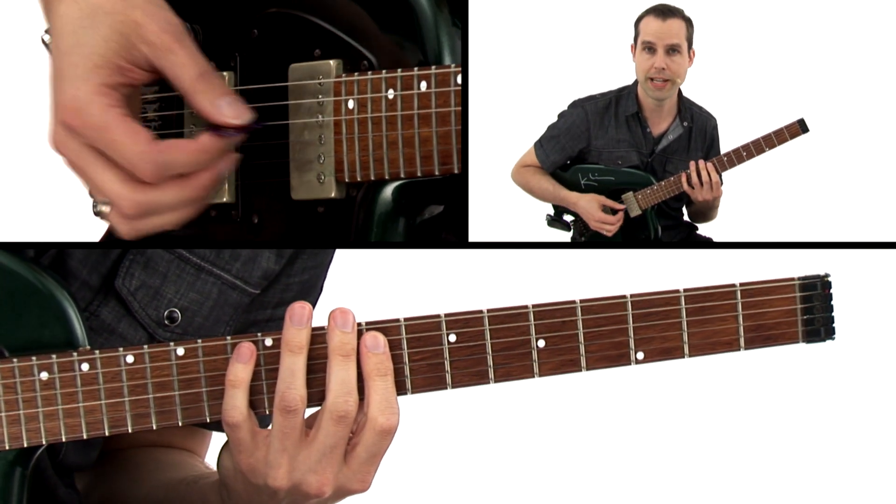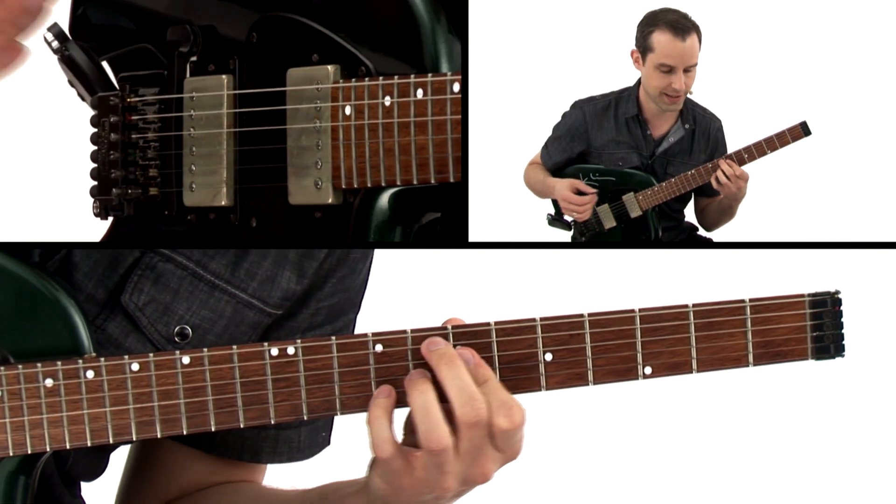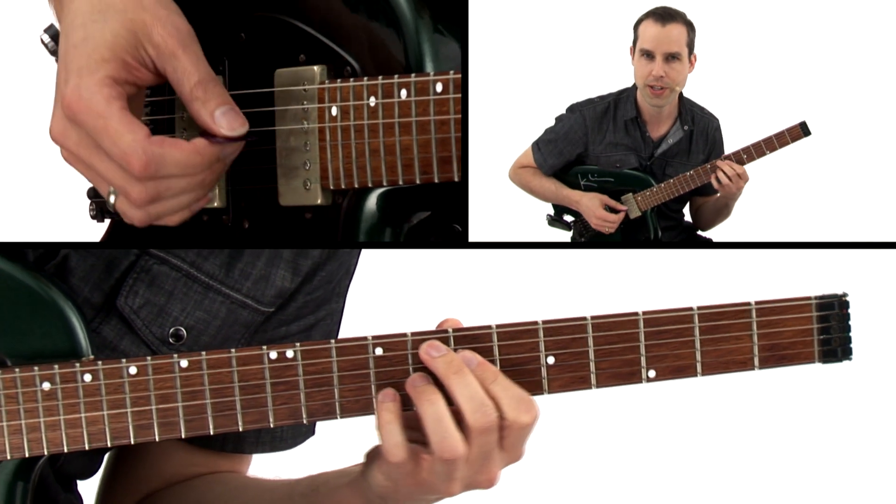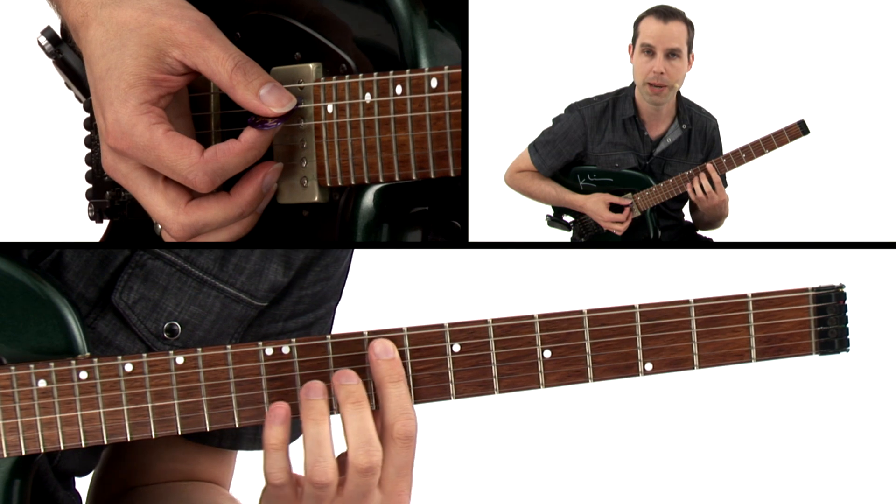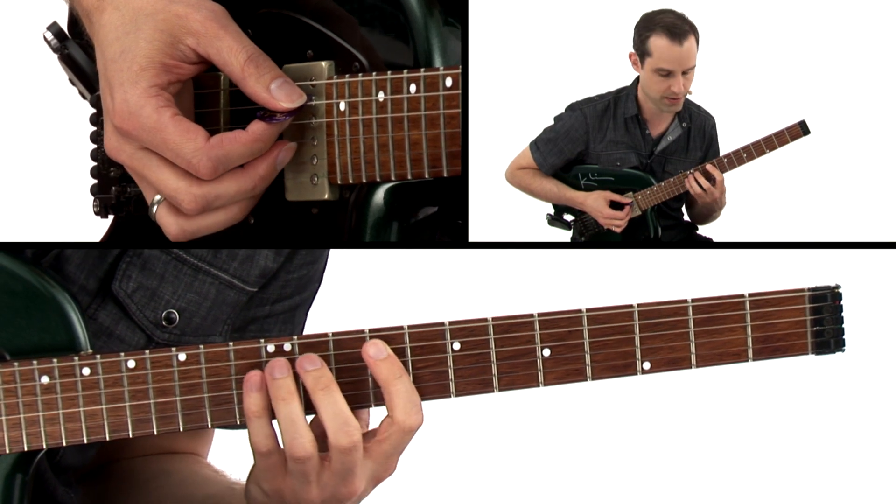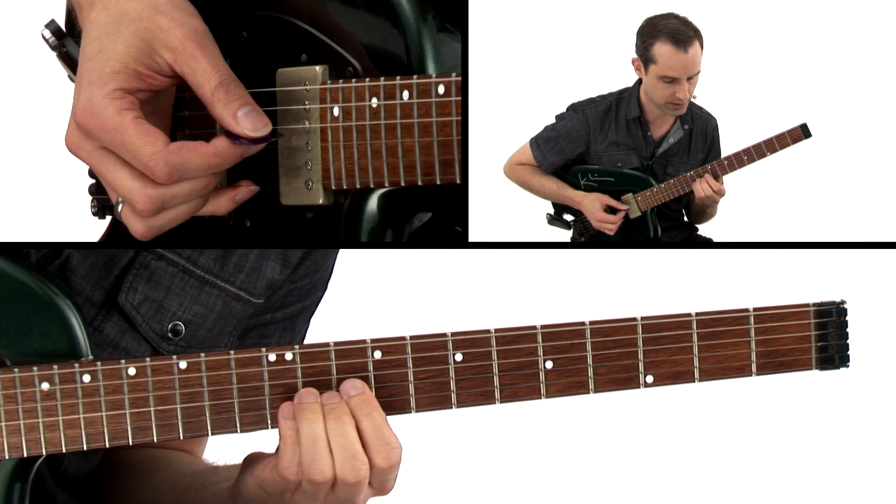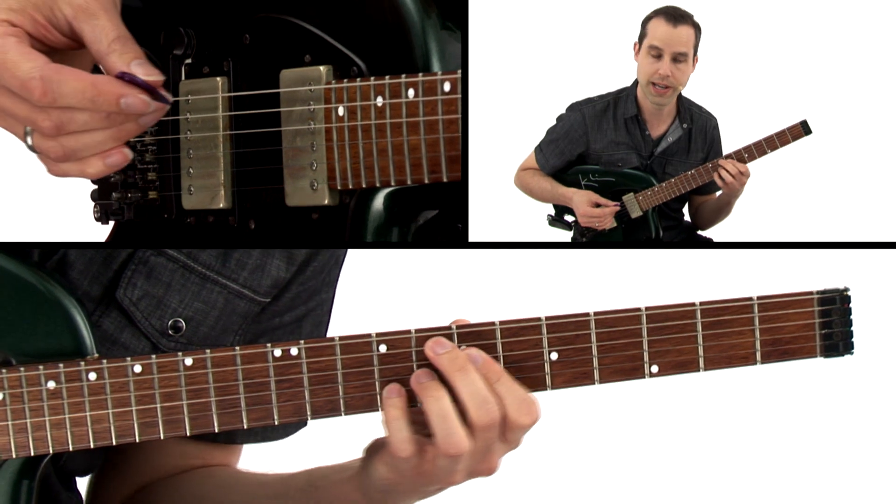Now, what that is is a 2-1-2-1 arpeggio for the altered scale. This is an F7 sharp 9, so I'm going to use those altered tones. So what I do is I go up a half-step from the chord, and I play a minor-major-7 arpeggio. It looks like this. Sounds great over that chord.